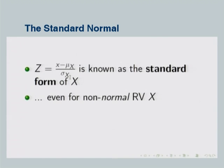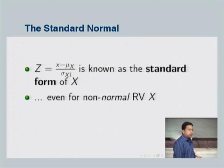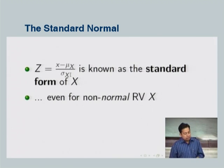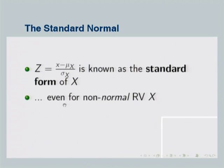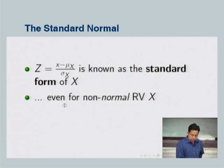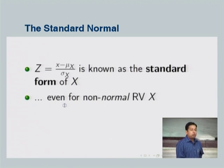For the normal distribution, applying the standard form gives the standard normal distribution. Similarly, you can define the standard form for any other distribution, like uniform. But the standard normal is the most important because we use it to compute values of PDF and CDF not only for the standard normal but also for the regular normal random variable with mu not equal to 0 and sigma not equal to 1.